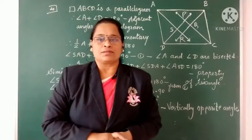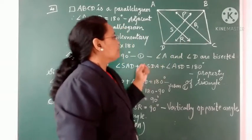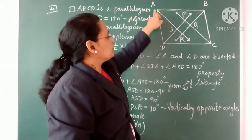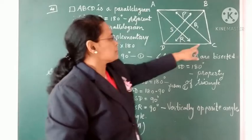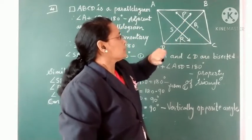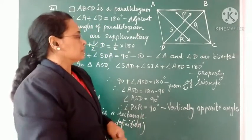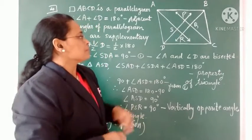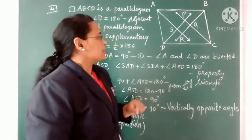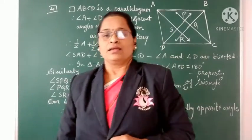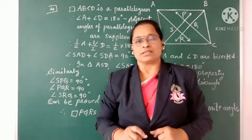This is the fourth example of this practice set. It is given that quadrilateral ABCD is a parallelogram. Angle A is bisected by ray AR, angle D is bisected by ray DP, angle C is bisected by ray CQ, and angle B is bisected by ray BR. Because of these bisectors, their points of intersection form four vertices, and joining them gives quadrilateral PQRS. We are asked to prove that quadrilateral PQRS is a rectangle.